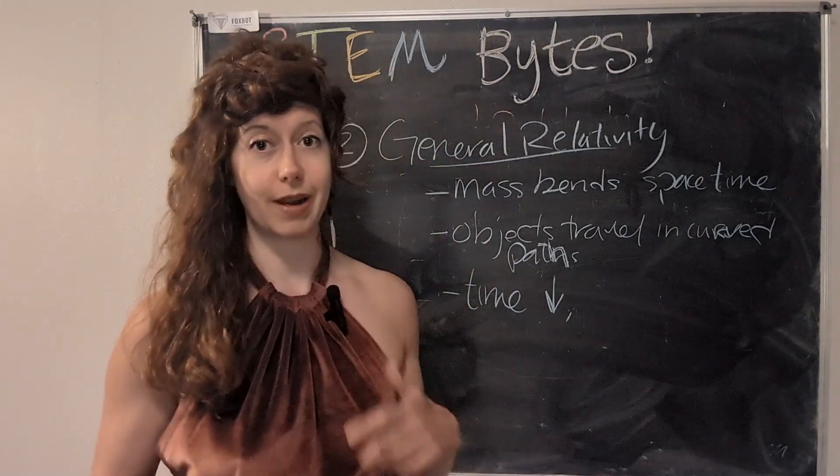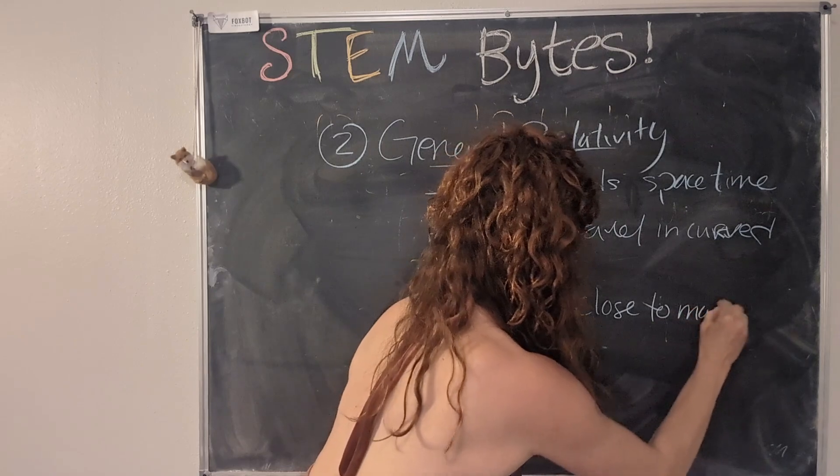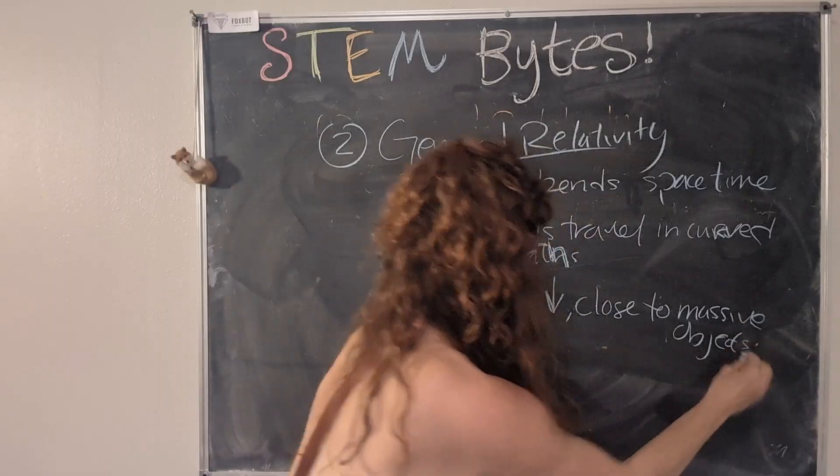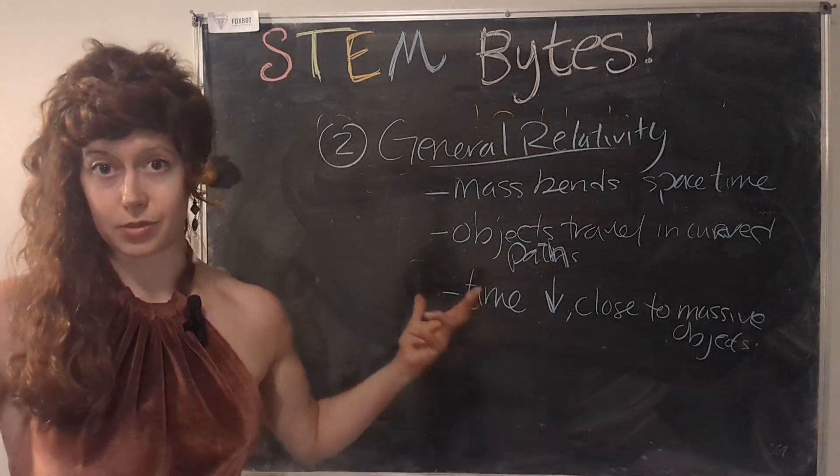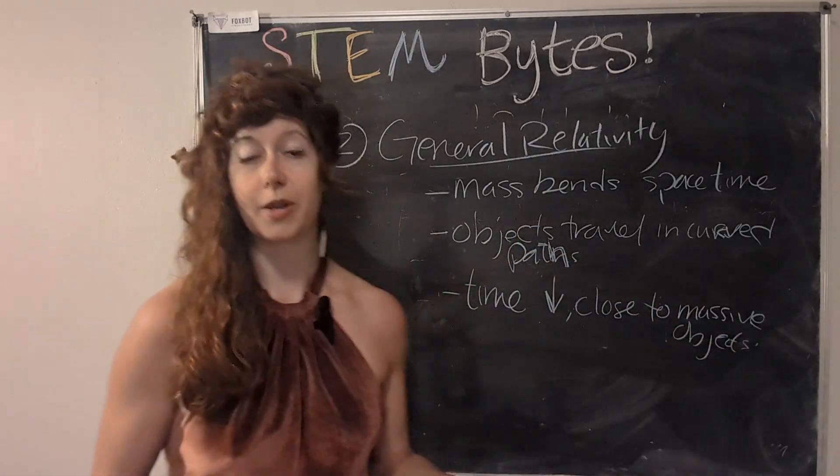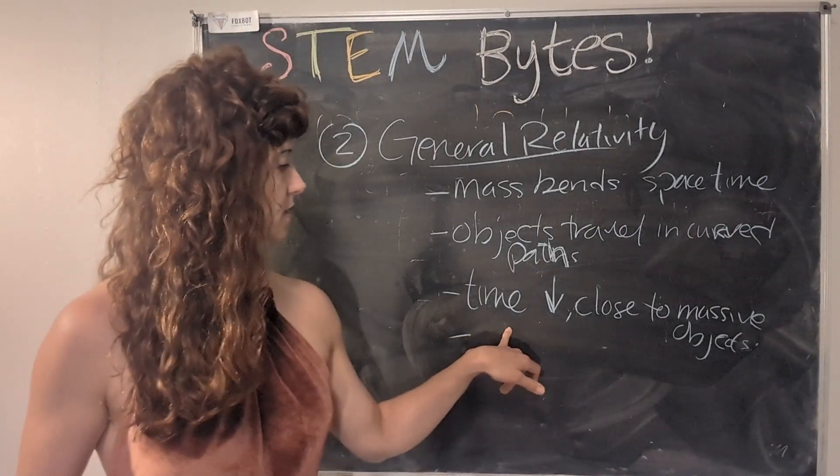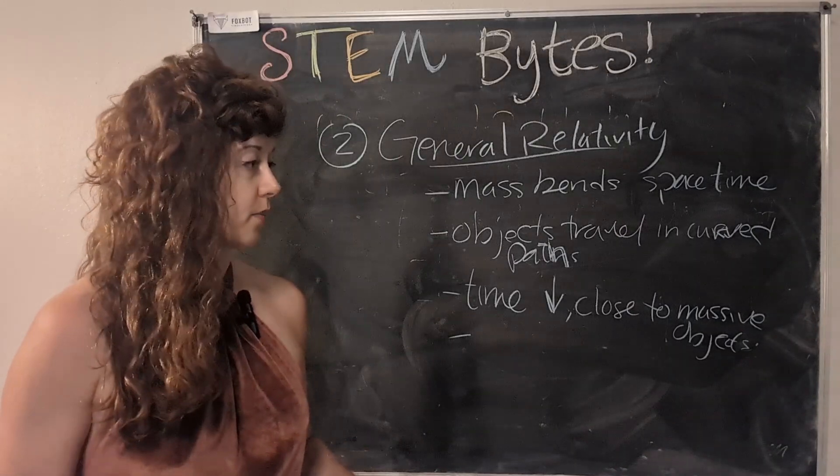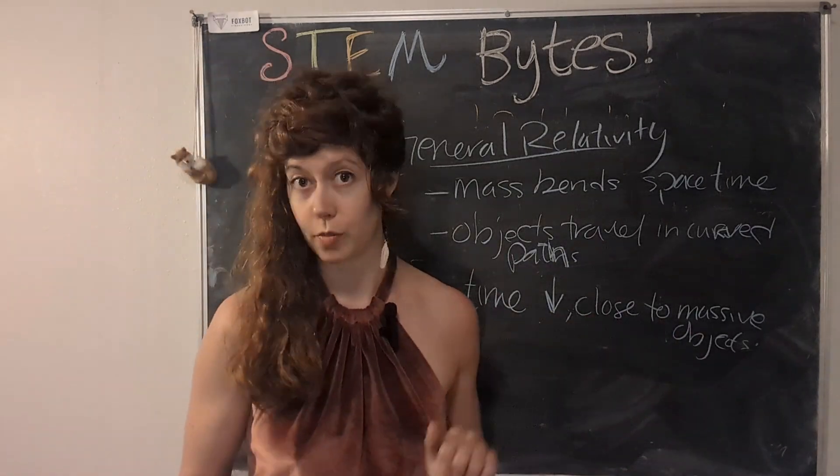So time actually slows down when you are close to a mass of objects. Close to massive objects. So this is also known as gravitational time dilation. So it's basically the same thing that happens when you're traveling very fast. But in this case, it's mass that slows down your internal clock. So this actually means if we were on a heavier planet, the time that we measure might be different than the time that a person on Earth might measure.